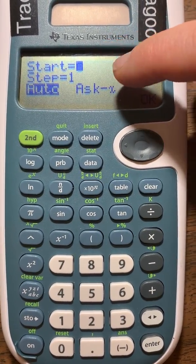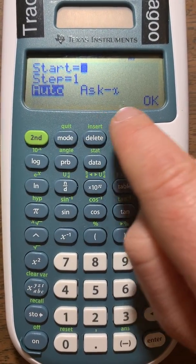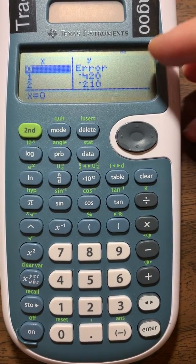We're going to start at 0, your step is going to be 1, you want it on auto, and all of this you just enter right through. When you hit OK, it brings you to the table.